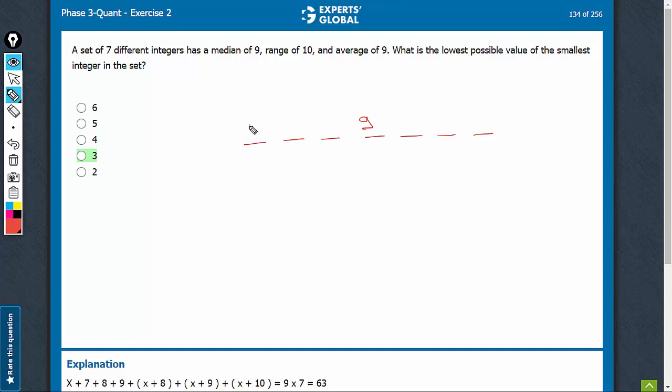Range is 10, so if the smallest value is x, the highest value is x plus 10. Average is 9, that means sum of all the terms is 63.